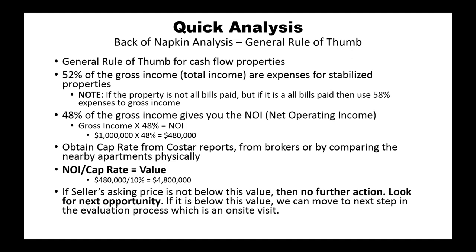We get the gross income from the offering memorandum or directly from the seller within the T12 — the trailing 12 months of income and expenses. This is only for properties that are not all-bills-paid; if it is all-bills-paid, use 58% of expenses against total income. 48% of the gross income gives you the net operating income, also referred to as the NOI. So you multiply gross income by 48% to get the NOI. For example, if gross income is $1 million times 48%, you get $480,000.